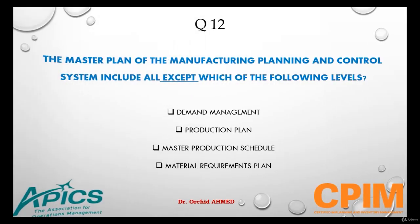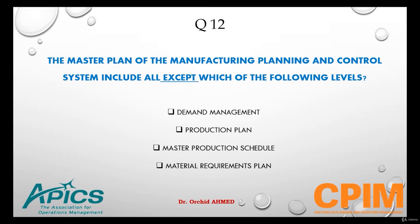Question number 12. The master plan of manufacturing planning and control system includes all except which of the following levels? The options are: demand management, production plan, master production schedule, and material requirements plan.